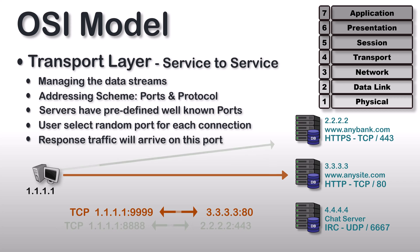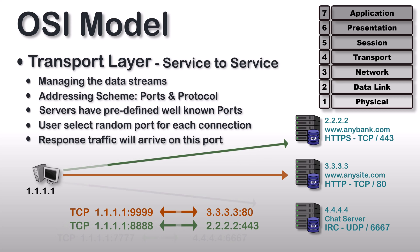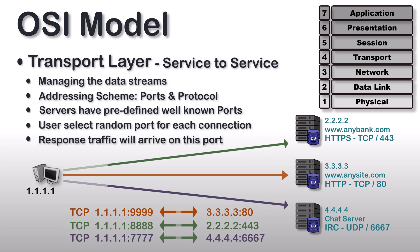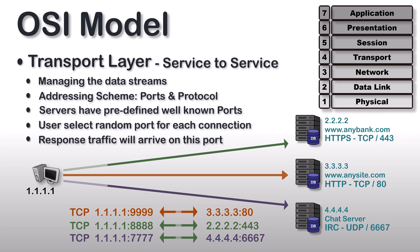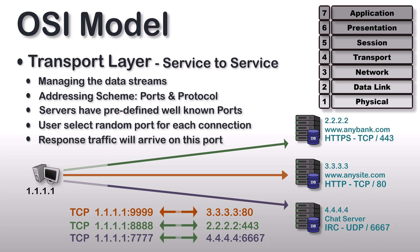This process occurs for each connection made by the user, and in each case the client is selecting a new random source port. Because of this new random source port, when all these servers respond to the IP address, whatever is destined to port 888 will be sent to the web browser, and whatever is destined to port 7777 will be sent to the IRC client. In this way, data streams are kept isolated from each other. These port numbers ensure that the right application gets the right data.